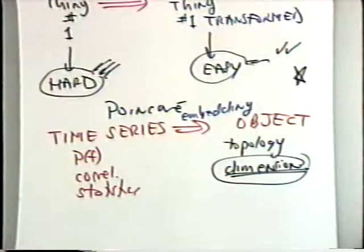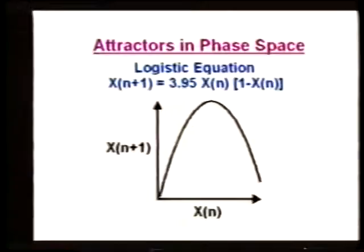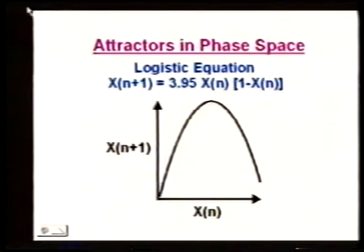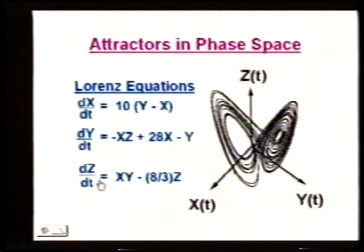Let's look at examples of attractors in phase space. The logistic equation has an attractor in the phase space of the parabolic form we already saw. Here is another example — the Lorentz equations, from which those x, y, and z variables came. This is the phase space and attractor for the Lorentz system — it has that characteristic butterfly shape.